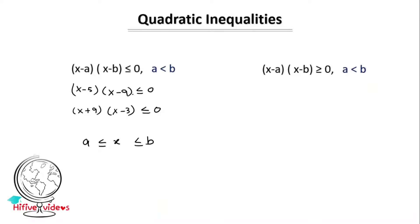Let's take the first example: x minus 5 into x minus 9 less than or equal to 0. Here a value is 5 and b value is 9. Using the formula, the result is 5 less than or equal to x less than or equal to 9. That means x can be 5, 6, 7, 8, and 9.